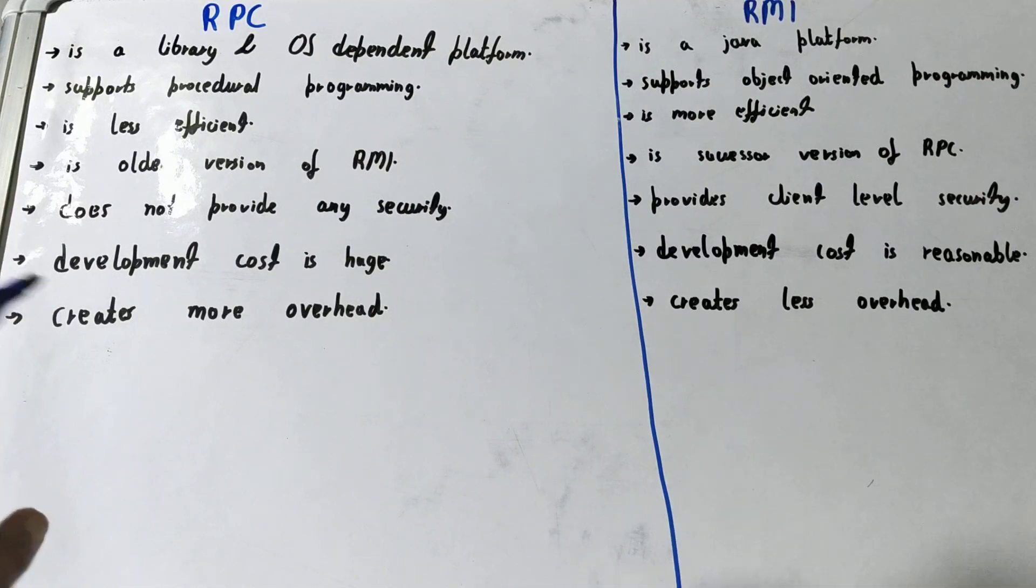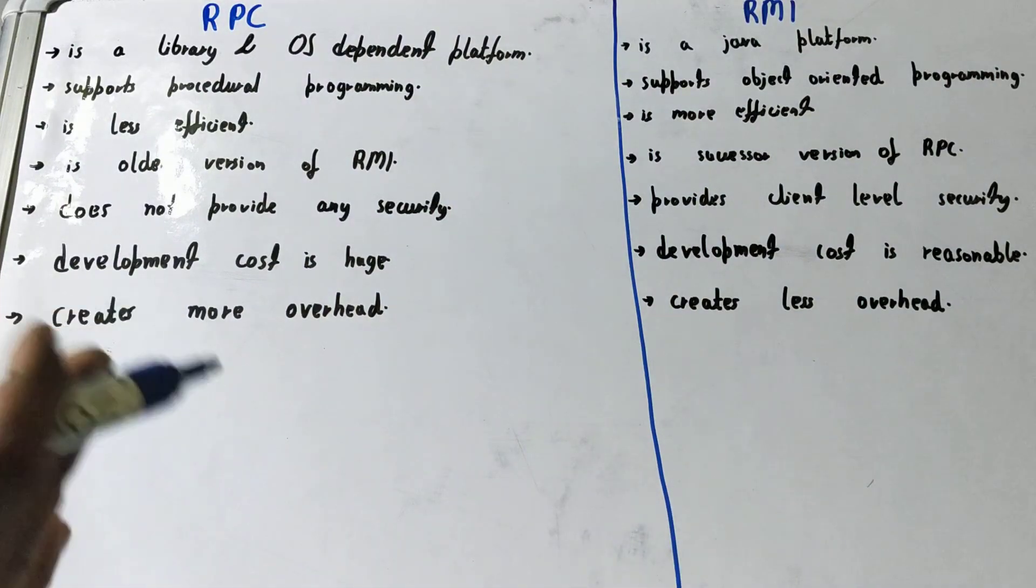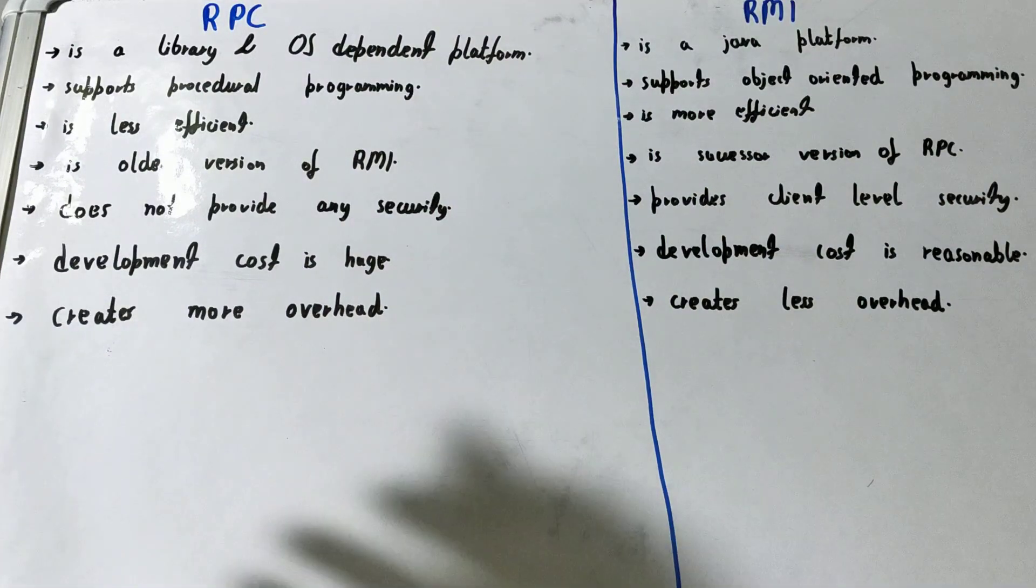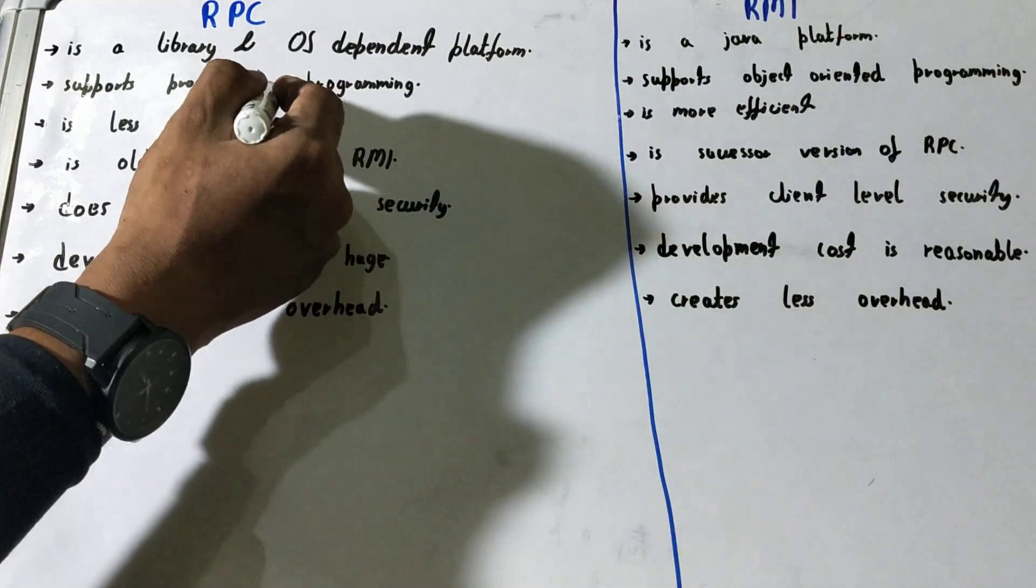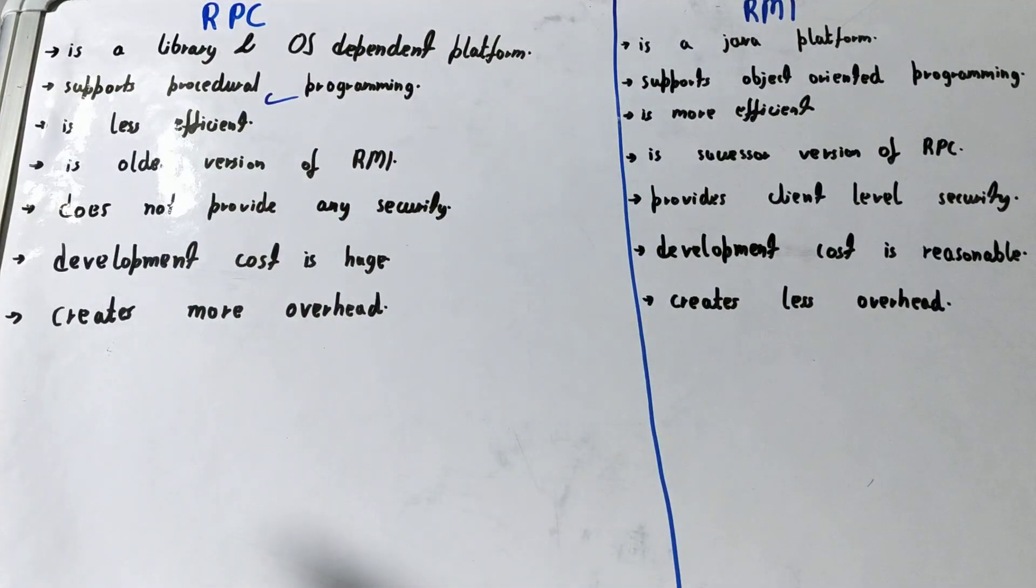RPC supports procedural programming languages like C, while RMI supports object-oriented programming languages like Java and C++.